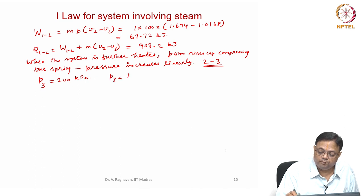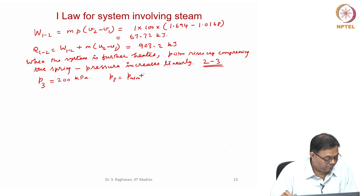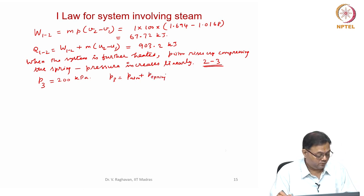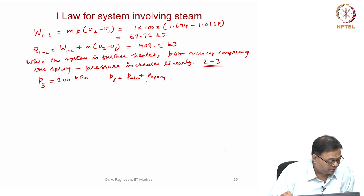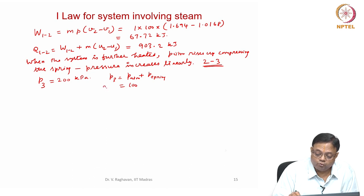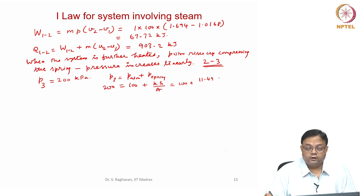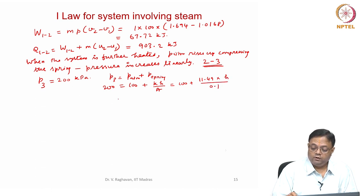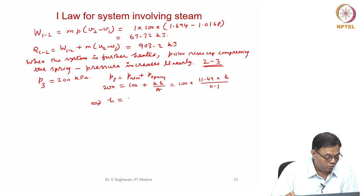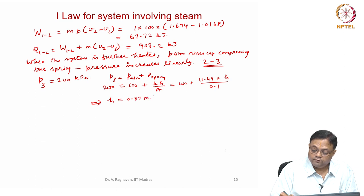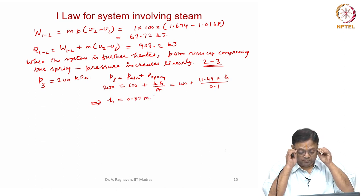P3 equals P atmosphere plus P spring. Since the piston mass is negligible, there is no pressure contribution from the mass. So: 200 equals 100 plus K times H divided by area, which is 100 plus 11.49 times H divided by 0.1. Solving this gives H equal to 0.87 meters. The spring is compressed by 0.87 meters.